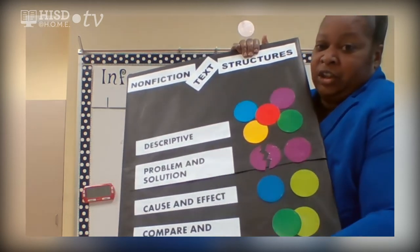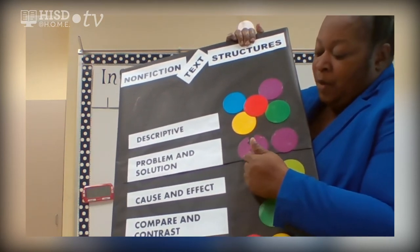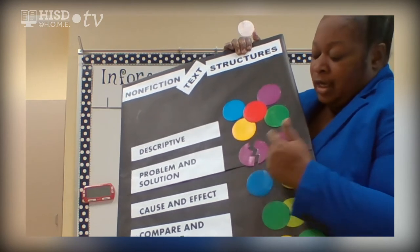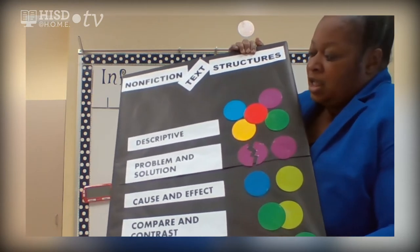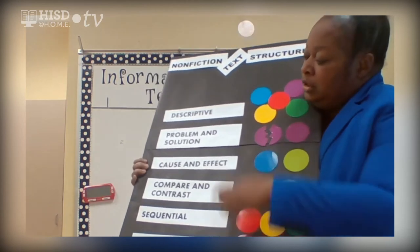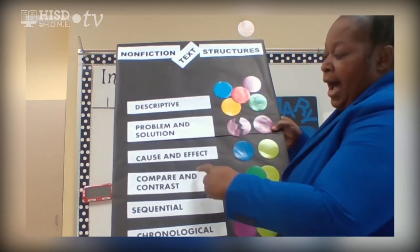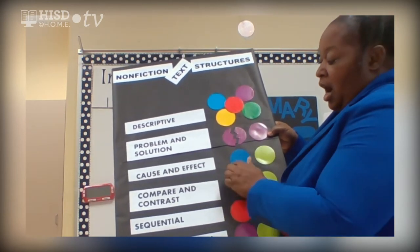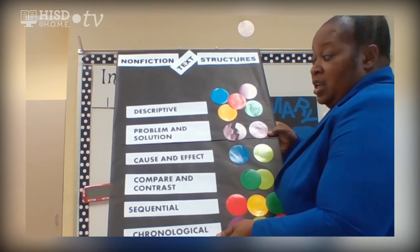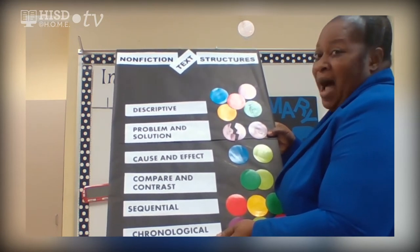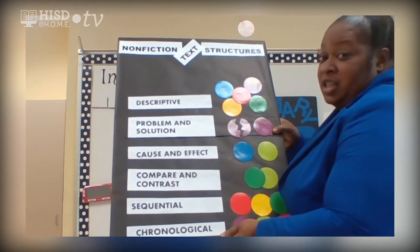Problem and solution: this is when authors pose a problem and put the pieces of the puzzle together in a solution. We call it a problem and solution text structure. Cause and effect is when an author demonstrates something that happens and the result of why it happens. When we see something that happens and why, we call that a cause and effect text structure.